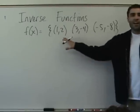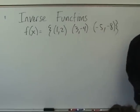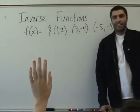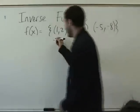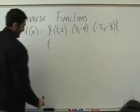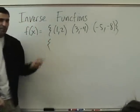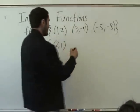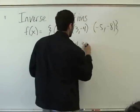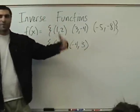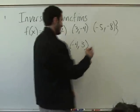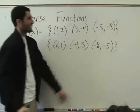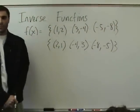So x, y, x, y, x, y. What is the inverse of f? The first point would be (2, 1). Then (-4, -3)... not quite. Then (-8, -5). That's the inverse.